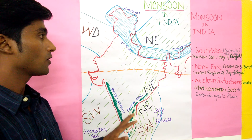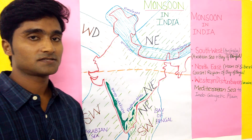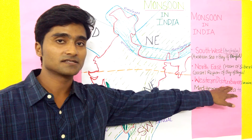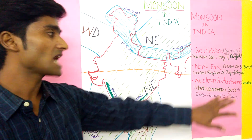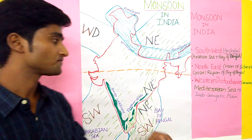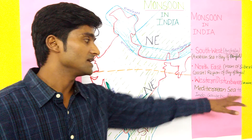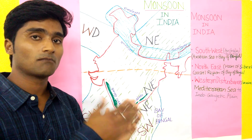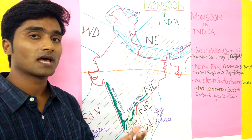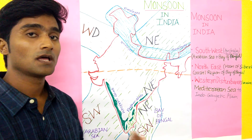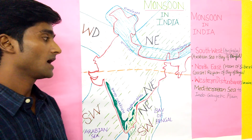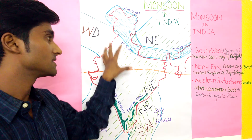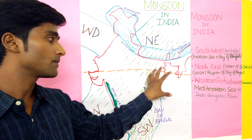Now, the Western disturbance comes from the Mediterranean Sea — from around Ukraine and the Mediterranean region. In the months of December, January, and February — the winter season in India — it gives rain to the Indo-Gangetic Plain. In the Mediterranean Sea there is high pressure, and in the Indo-Gangetic Plain there is low pressure.